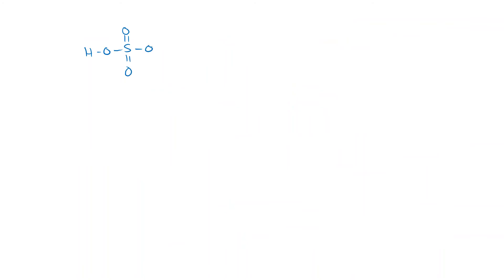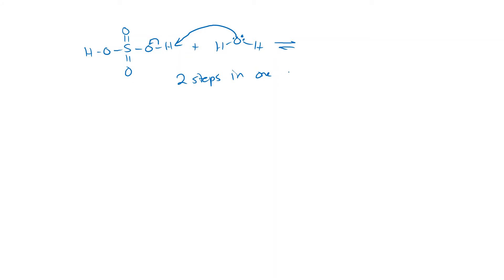We don't need to draw this out that slowly every time. When drawing the mechanism, you just use the lone pair to make the sigma bond and break the other sigma bond to make a lone pair — two arrows in one step. That gives us HSO4- plus H3O+. In Bronsted-Lowry acid-base reactions we can draw both the making and breaking of the bond in a single step.